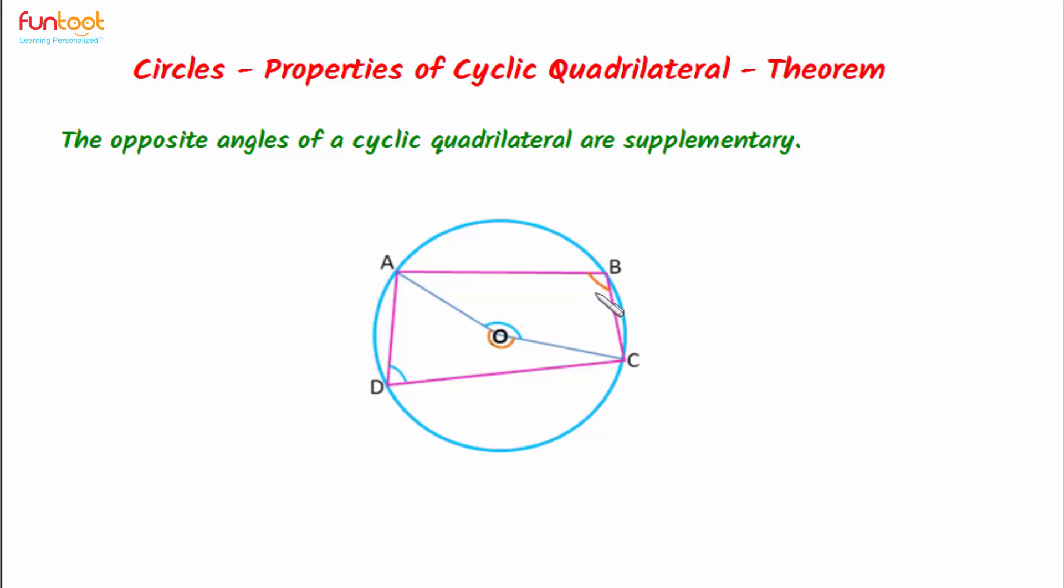We have to prove here that angle B plus angle D is equal to 180 degrees and angle A plus angle C is also equal to 180 degrees.